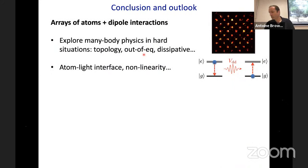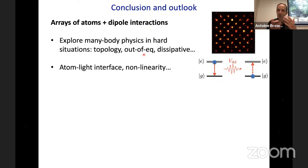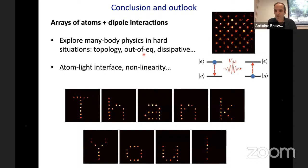In conclusion, this platform combining arrays of individual atoms with dipole interactions allows exploration of many-body physics in non-trivial situations: topology, out-of-equilibrium phase diagrams, quantum phase transitions, controlled dissipative regimes, and collective atom-light interfaces where the system's collective response to incident light can be probed.